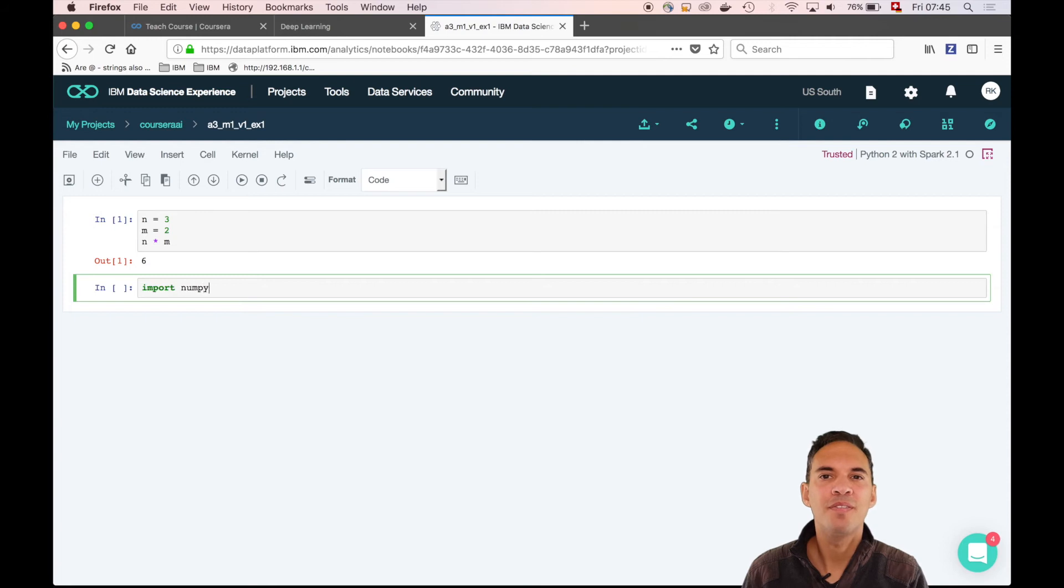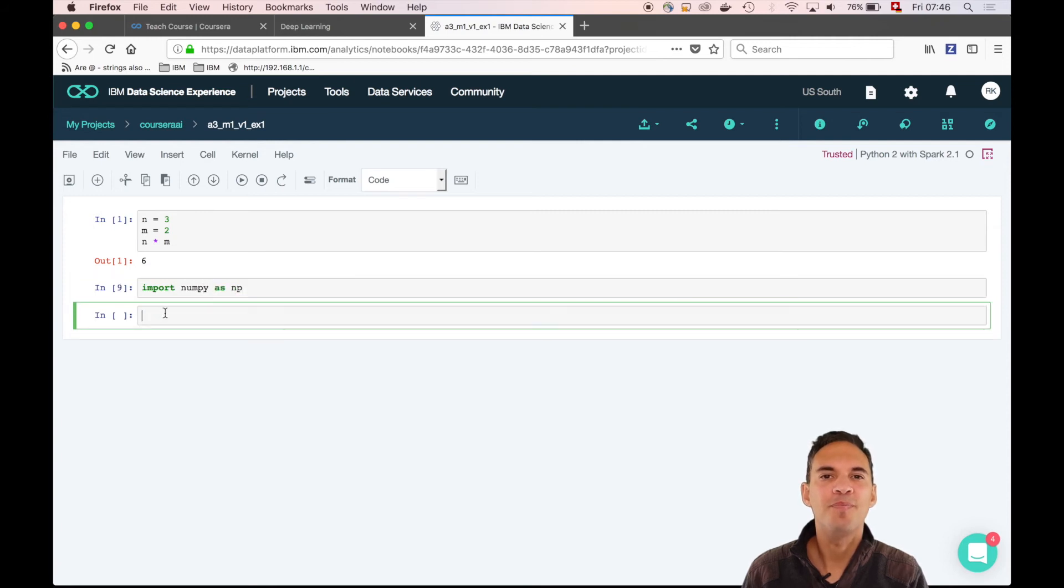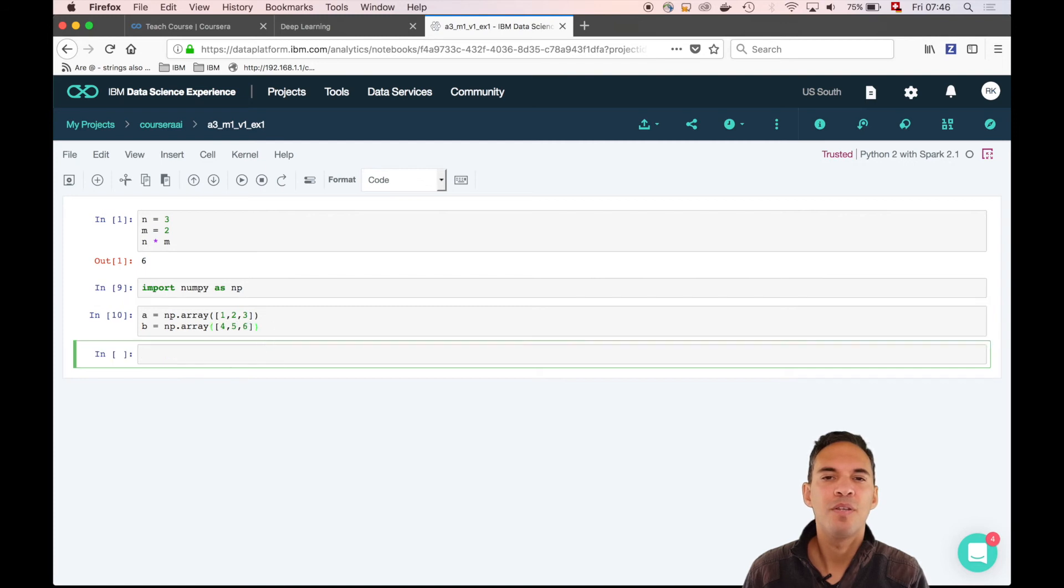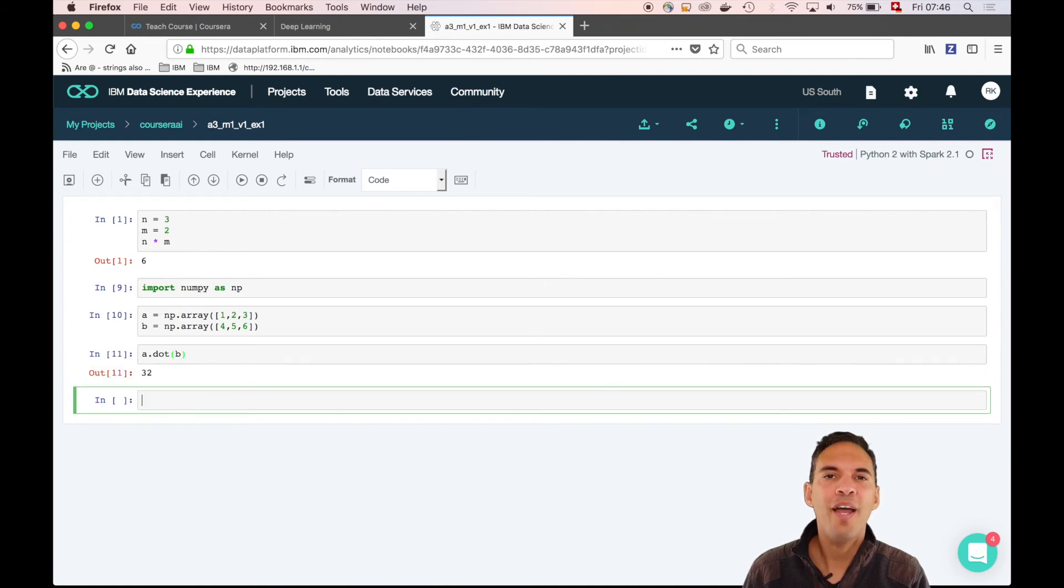So let's import it. Now we create two vectors a and b. Note that those are implemented as one-dimensional numpy arrays in Python. Now we use the dot method of the numpy array object in order to do the calculation.